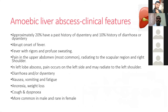Clinical manifestations of amoebic liver abscess: around 20% of patients have a history of dysentery and around 10% have a history of diarrhea. The most common symptom is upper abdominal pain, particularly radiating to the right shoulder, with fever of abrupt onset. Left lobe abscess may cause left-sided abdominal pain radiating to the left shoulder. Other symptoms include nausea, vomiting, fatigue, anorexia, weight loss, cough, and dyspnea. Amoebic liver abscess is more common in males.